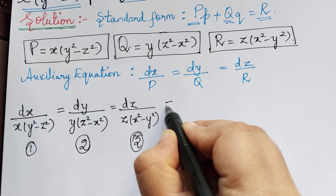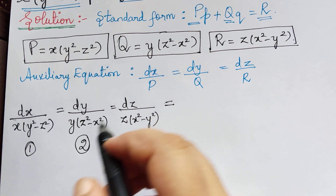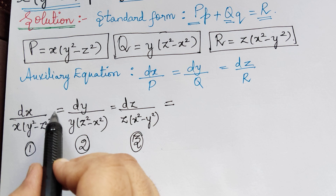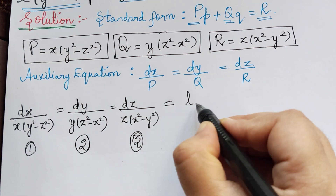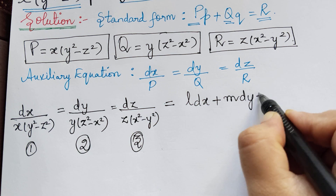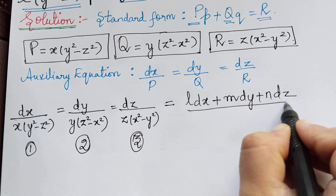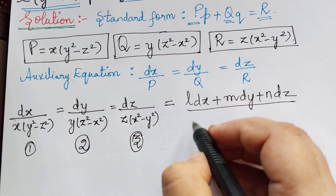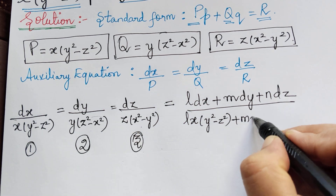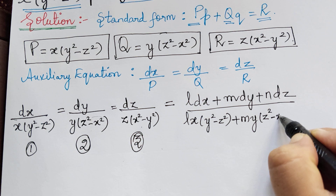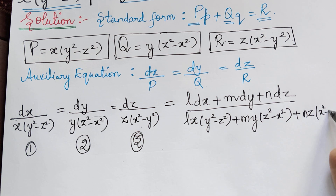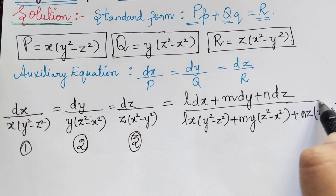From the method of multipliers, we can form a fourth ratio. We represent the multipliers as L, M, and N. In the numerator we get L dx + M dy + N dz, and in the denominator: Lx(y² - z²) + My(z² - x²) + Nz(x² - y²). This is the fourth ratio.